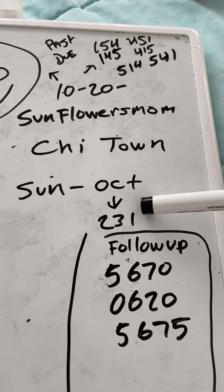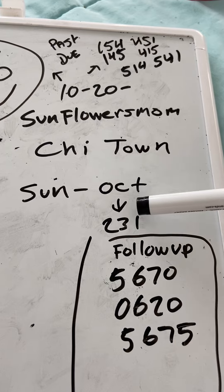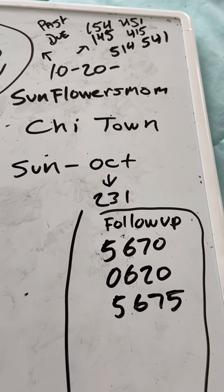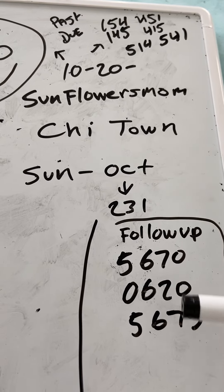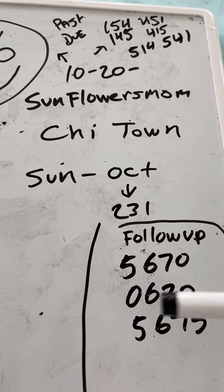These are follow-ups from the 231: 5670, 2600.